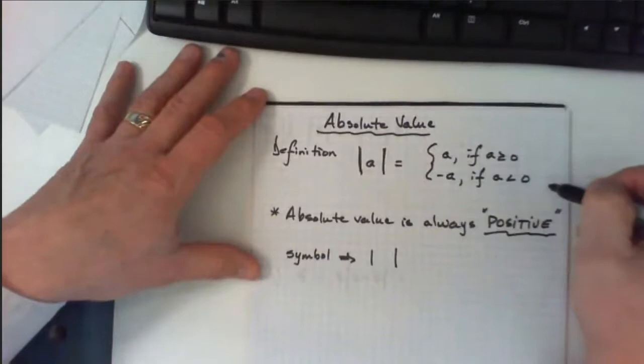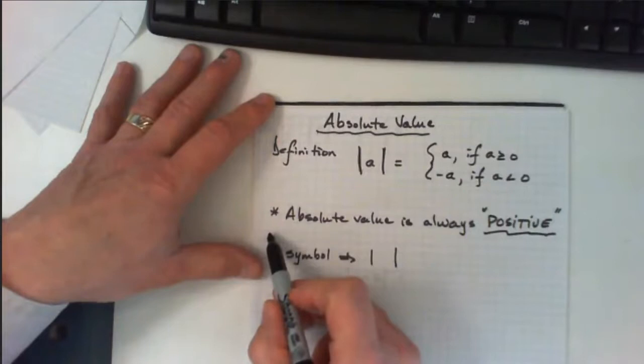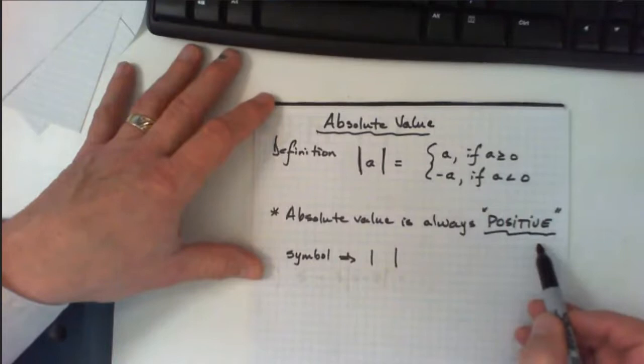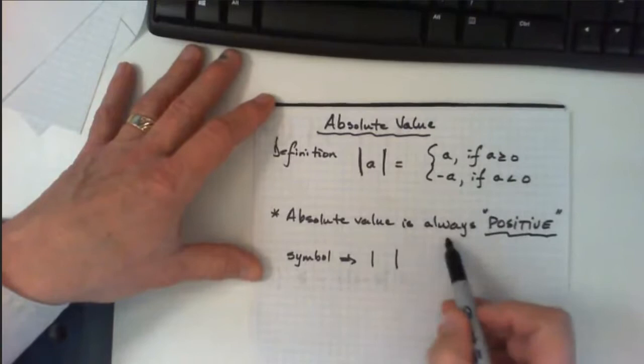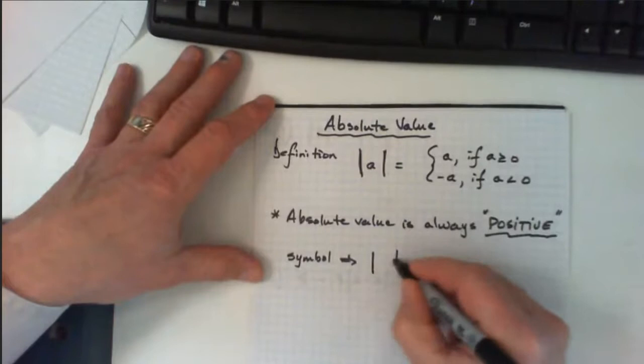This is the general definition which is a little complicated. An easy way to remember it is that the absolute value of something is always positive. Just remember that when we take the absolute value of something, the answer is always positive.